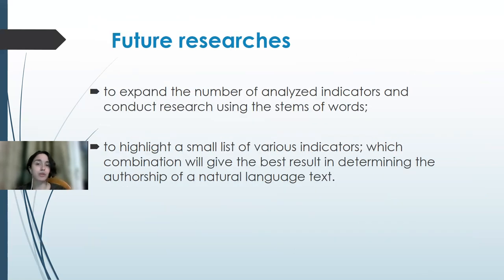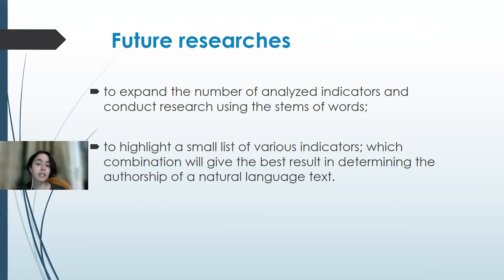Regarding future research: the first goal is to expand the number of analyzed indicators and conduct research using word stems. The second goal is to identify a small list of diverse indicators whose combination will give the best results in determining the authorship of natural language texts.